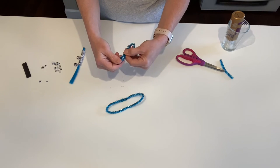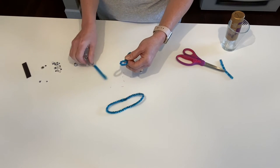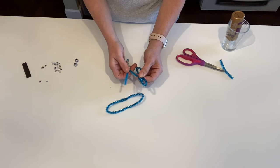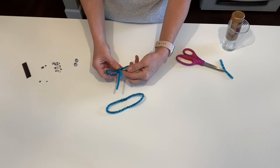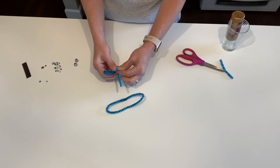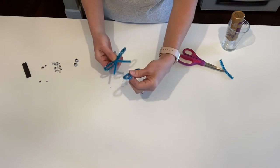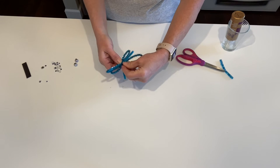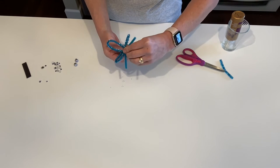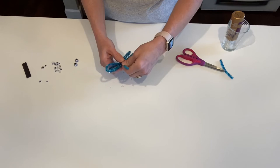Start with the smaller set of wings first and open up those two ends on the body. Slide that in between. Make sure it's centered so both wings look the same size, and give that a twist. Then add your larger set of wings. Same thing - make sure it's centered and give that a twist.